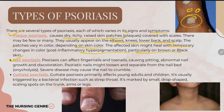Next is nail psoriasis. It can affect fingernails and toenails, causing abnormal nail growth and discoloration, including pitting. The nail may loosen and separate from the nail bed. In severe cases, the nail may crumble.